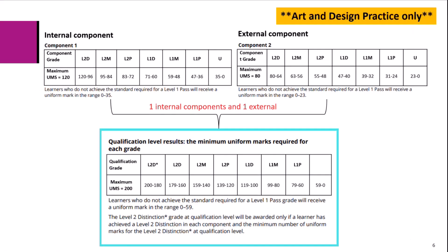This information is for Art and Design Practice only, as it's different to the other specifications. Art and Design Practice has two components, unlike the rest of the suite which has three components. Accordingly, there are fewer uniform marks. Overall UMS is out of 200, internal component UMS is 120, and the external component UMS is 80.